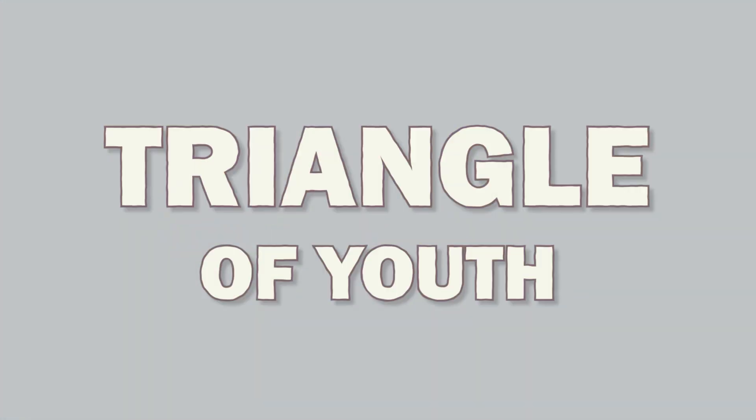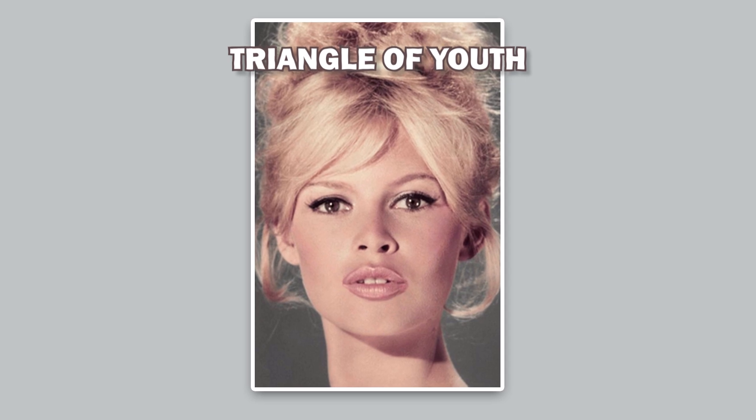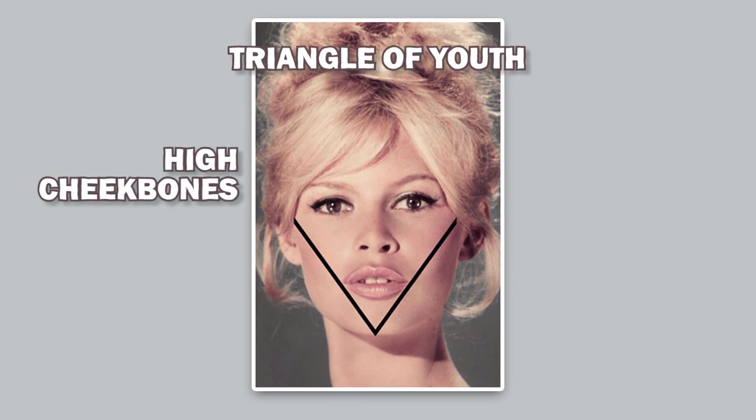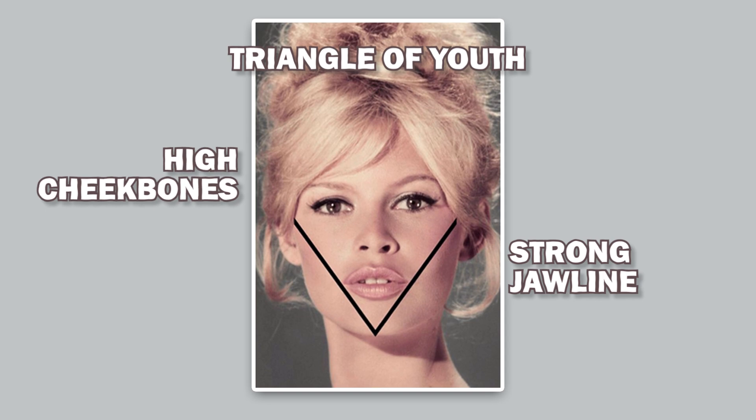Before we discuss the different layers of facial aging, let's briefly examine the triangle of youth. When we are young, our faces have a kind of triangular shape, referred to as a triangle of youth. This means that the upper part of our face is broader and gradually narrows towards the chin, creating a youthful V-shape. Think of high cheekbones, a strong jawline, and more volume in the upper parts of your face.